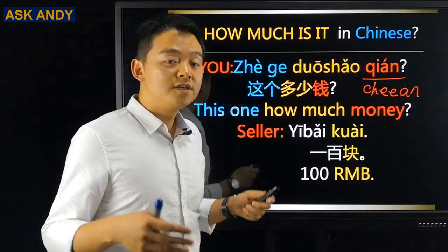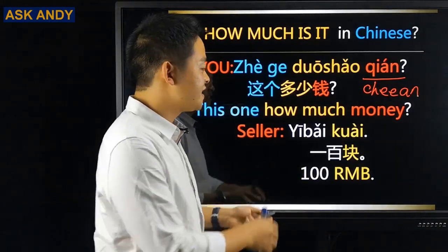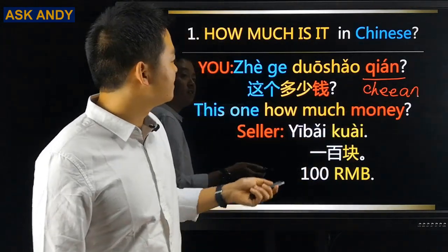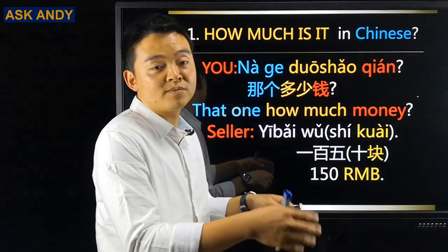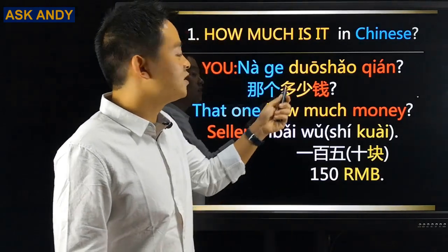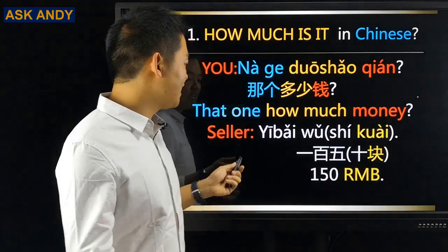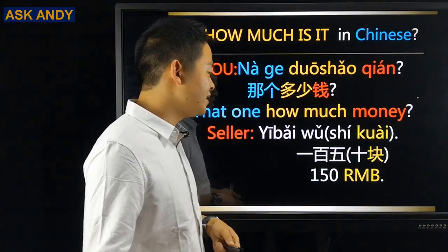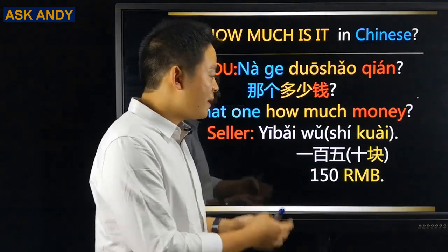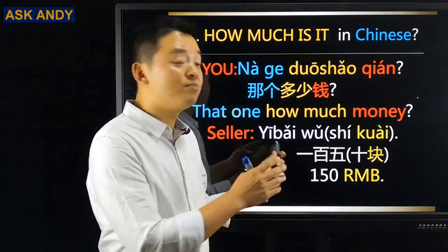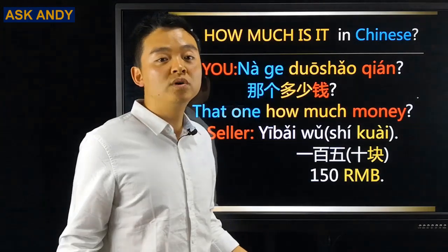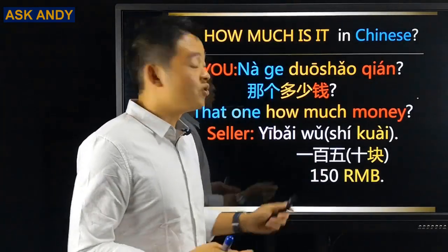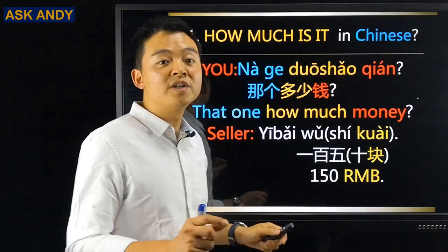That phrase is for something close to you. If something costs 100 RMB, the seller would say 100 RMB. For money expressions in Chinese, you can check out the linked video. If you're asking about something far from you, point to it and ask: 那个多少钱? — 'that one, how much?' The seller might say the price is 150 RMB: 一百五十块, or just 一百五. Remember, 一百五 is 150, not 105. Check the linked video for more on numbers over 100.